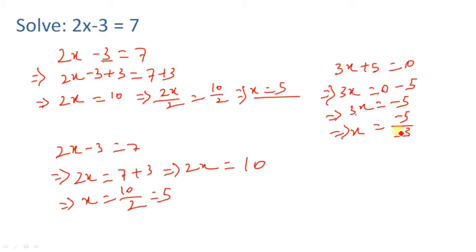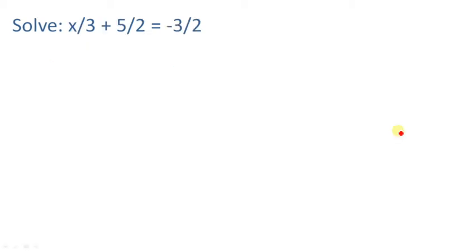Remember: when a multiplication is taken to the other side, it becomes division; if it is division, it becomes multiplication. The sign does not change when a multiplied term changes sides — only addition and subtraction change signs. We will see more of this in further videos.